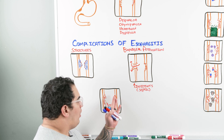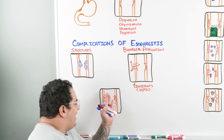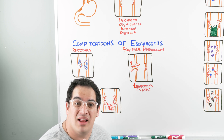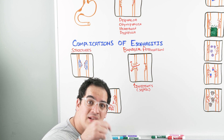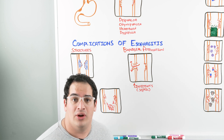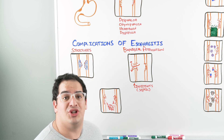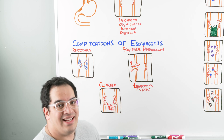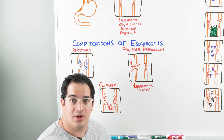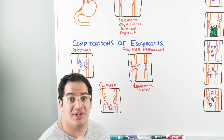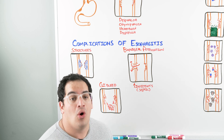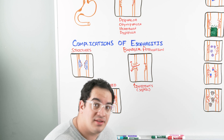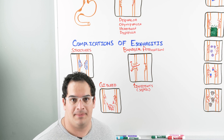The last complication: if you're ulcerating and eroding through the esophageal mucosa, just beneath in the submucosa are blood vessels. If you rip into them, blood leaks into the esophageal lumen and you'll have GI bleeding. So the complications of esophagitis include strictures, esophageal perforation with risk of sepsis, and GI bleeding.